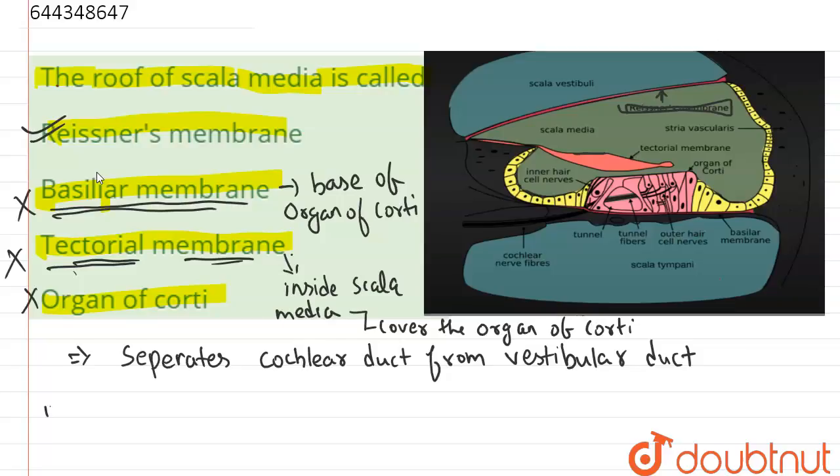The fourth option here is organ of Corti. Now organ of Corti is the organ where we have certain cells which are known as hair cells. And these hair cells can sense the auditory message...